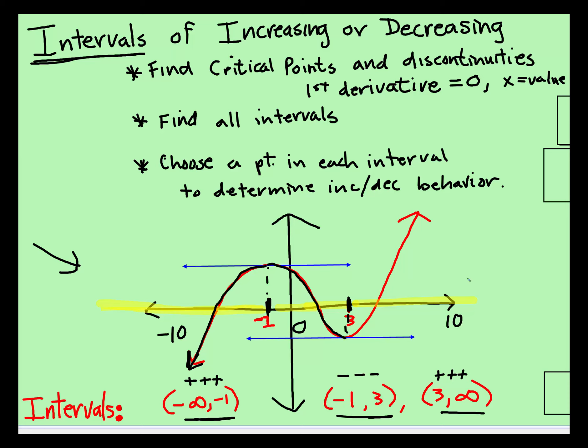We'd take each of those and we would plug them in. So we'd plug into the derivative, we'd plug in f prime of negative 10, f prime of 0, f prime of 10, and we don't even care what the number value is. All we want to know is, is it increasing or decreasing? And that's what you're going to do.